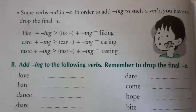Add ing to the following verbs. Remember to drop the final e. The verb 'love' ends in e, so we have to drop the final e and add ing. Verb 'hate' ends in e, so we have to drop the final e and add ing. 'Dance' ends with e, so we have to drop the final e and add ing.